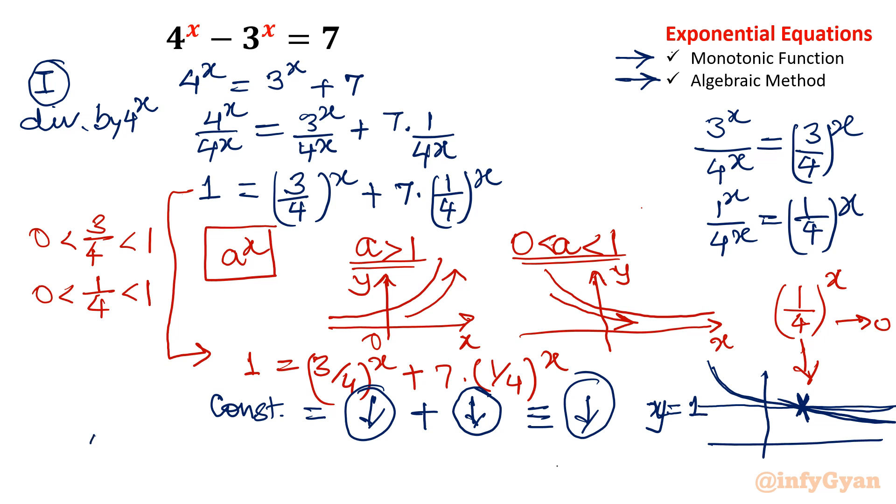So let us find out. That method is called guess and check method. So I am using that guess and check method. x equal to 1, so 4 minus 3 equal to 7. No. x equal to 2, 16 minus 9 equal to 7. Yes. So our answer is x equal to 2. Using analytical means we conclude something over statements. And then we come to know that only one solution is there. By that method you are getting x equal to 2.